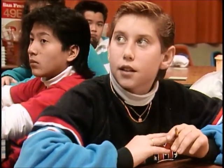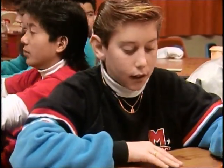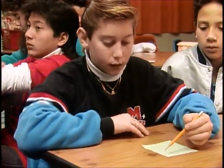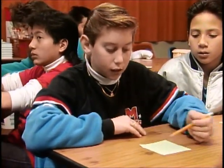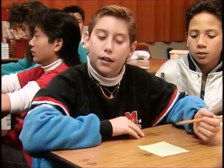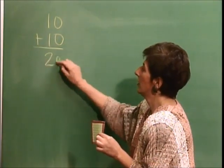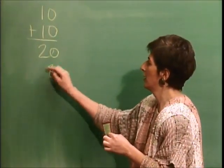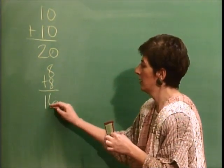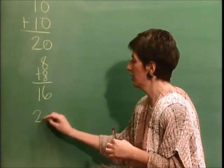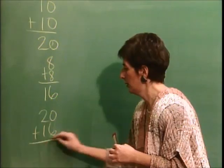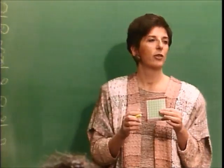One group got 36 because there are 10 on the top and 10 on the bottom. Taking off the two corners, it's 8 on each side. So it's 20 plus 16 equals 36. Jimmy had the top and the bottom, which was 10 each, getting 20, then took away the corners and added the two sides, for an answer of 36.